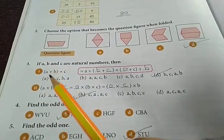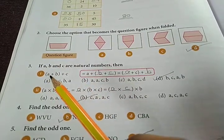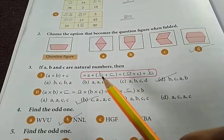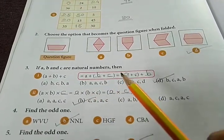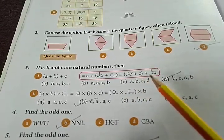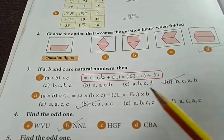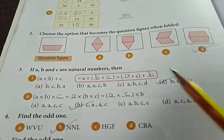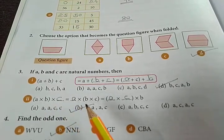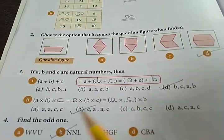Then question number 3, if a, b and c are natural numbers then, first (a + b) + c is equal to a + (b + c) is equal to (a + c) + b. So the answer is option D, b, c, a, b.